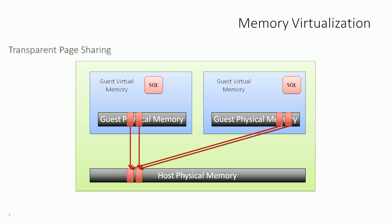Transparent page sharing is simply deduplication for memory. It runs all the time — not just when there's contention — it runs constantly, and you don't have to do anything to enable it.